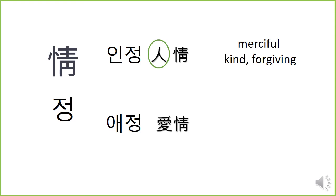애정. 애 is associated with a very romantic, pretty color — pink. 애 means love. 애정 means loving feeling.